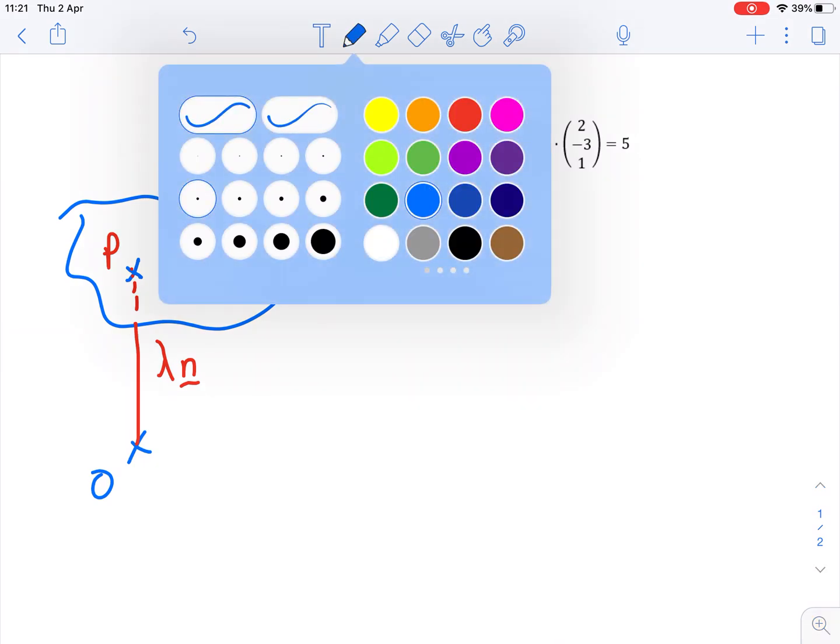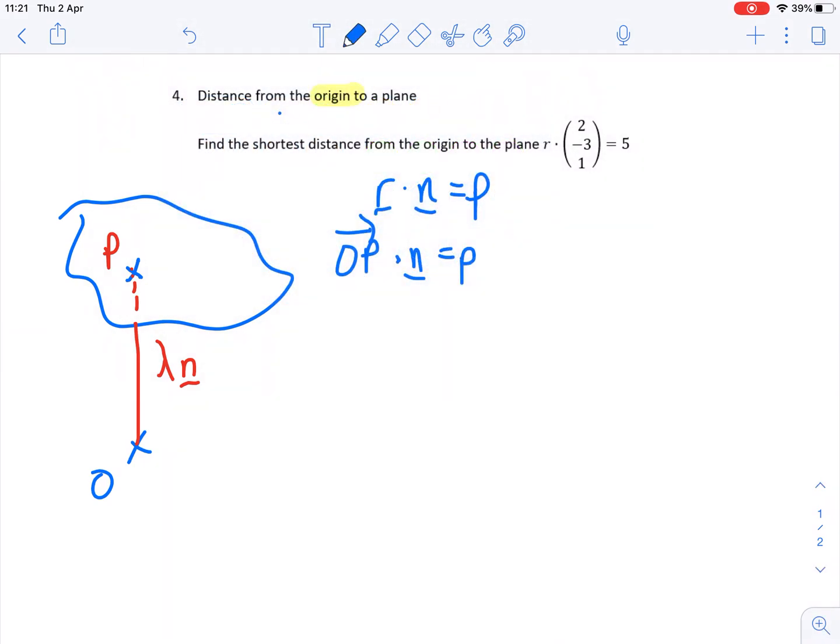So if I have a think about that, and I substitute in up here, so OP is lambda lots of the normal vector, and that vector needs to be dotted with the normal vector, and what I get is the scalar product. Let's have a look at how this works if we expand it out.